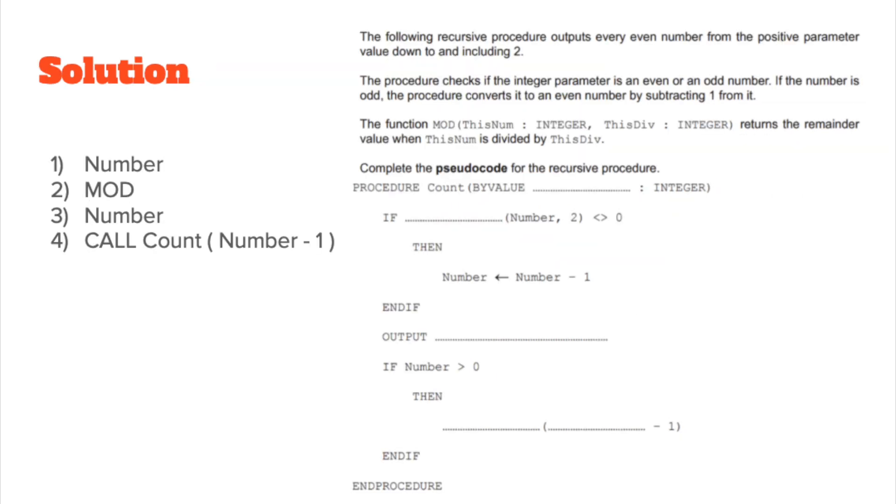Okay hopefully you've got something like this. The first one was number because the number integer value needs to come in. It was given in the pseudocode later on. If mod of that is not equal to zero then you decrement, and after that you output the number. If number is greater than zero then you've got to do a recursive call, and in pseudocode we simply call the function, so call count number minus one and that's all there is to this pseudocode. Hopefully you've got this.